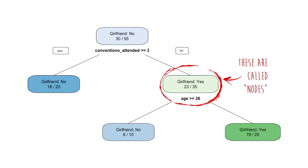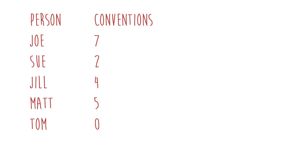There are many metrics for variable importance, but a favorite is permutation variable importance. The basic idea: it goes back over the hundreds or thousands of trees, and at every node takes the variable that splits that node — say, conventions attended — and shuffles everyone's scores. So if Joe had a score of seven, he might get Tom's score who's never been to a convention. By shuffling scores, it breaks any association that variable had with the outcome, making it random. If predictions under the original data versus the shuffled data are vastly different, that variable was super important — permutation variable importance measures the difference in prediction accuracy before versus after shuffling.